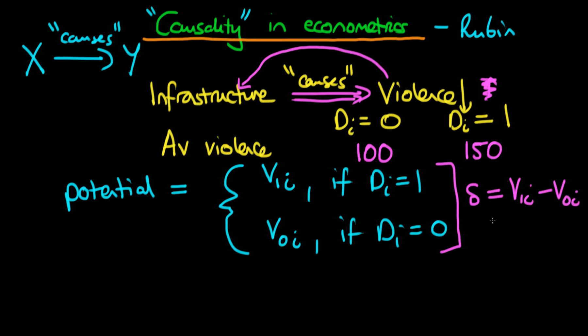It's essentially like having two parallel universes: in one, the state didn't receive infrastructure spending, and in the other it did, and we compare their levels of violence. We're comparing the potential levels of violence in these two different universes. Obviously we don't actually observe that, but if we could, then delta would represent the causal effect of infrastructure spending on violence — and this is the individual-level effect.